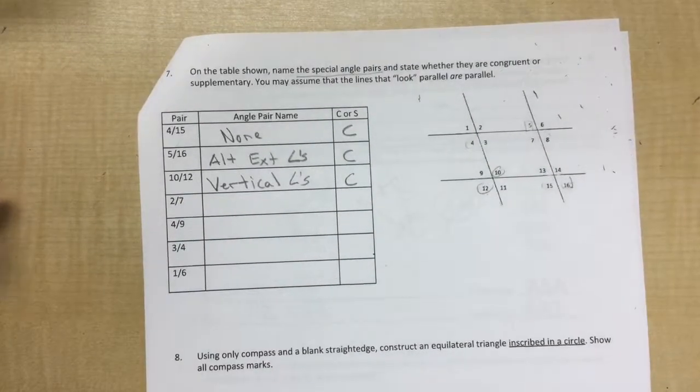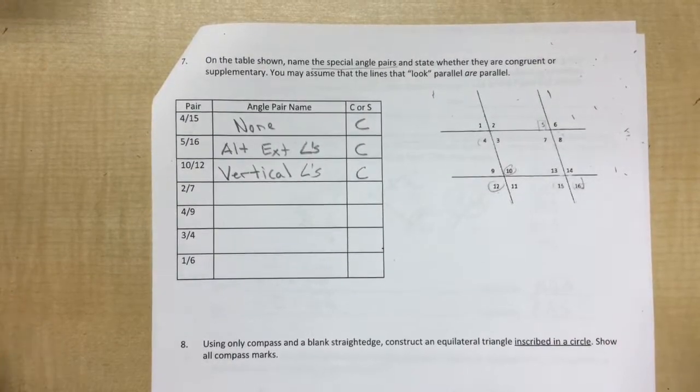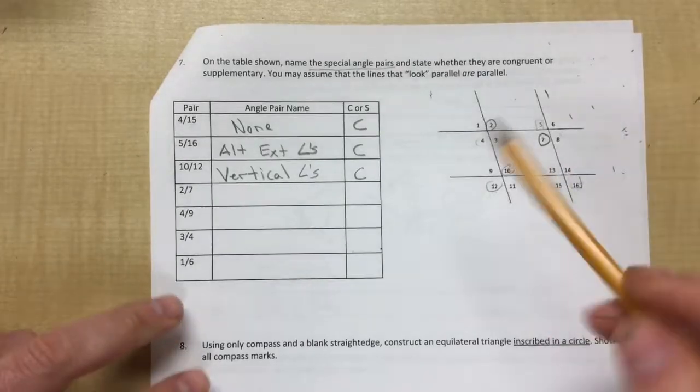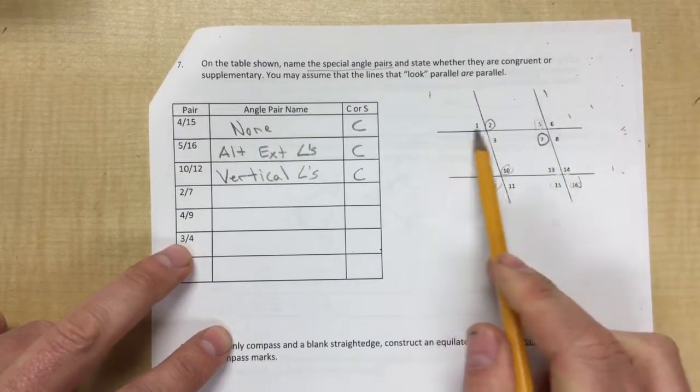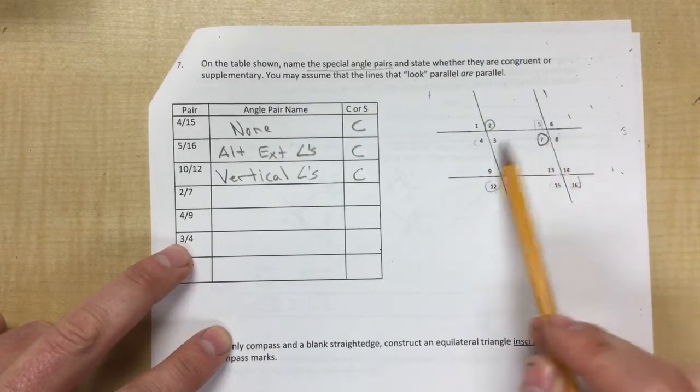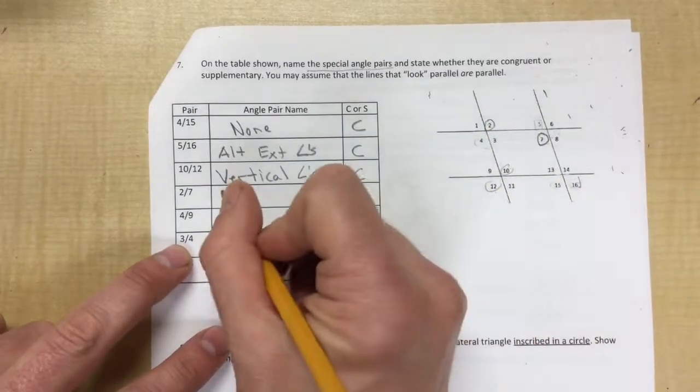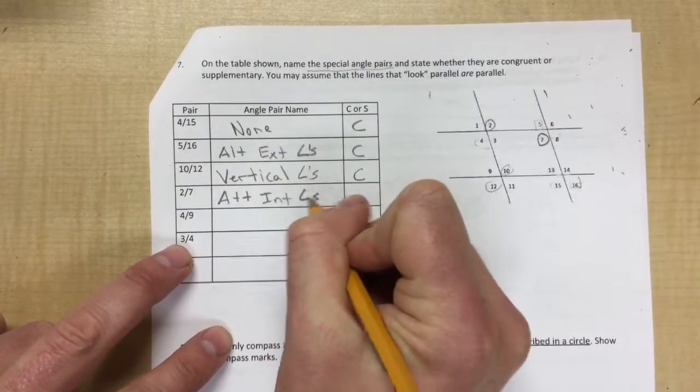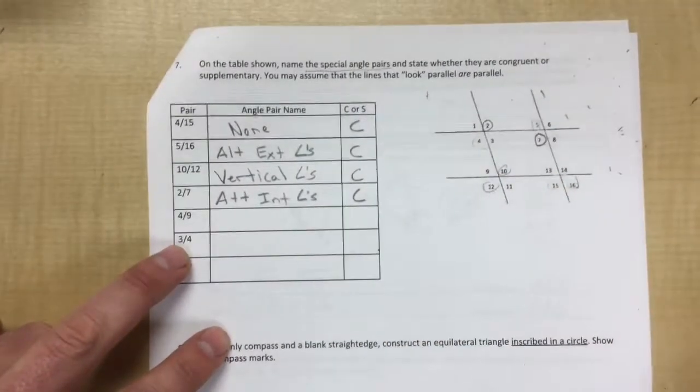Basically with these, if they look the same, they are the same. If they look different, they're supplementary. Okay, two and seven. So two and seven. Now we're looking at these two parallel lines with this as the transversal. You can see two and seven are on the inside of these parallel lines and they're on opposite sides. So they are alternate interior angles. And since they look congruent, they are congruent.